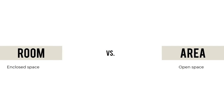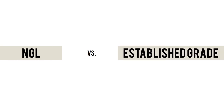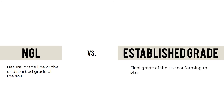A room is a typically enclosed space, while an area is an open space. The Natural Grade Line (NGL) refers to the undisturbed, natural condition of the soil. Established Grade is the final grade of the site conforming to plan, where excavation, filling, and backfilling have occurred.